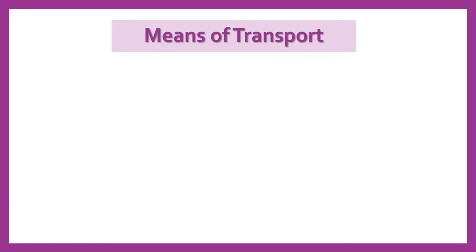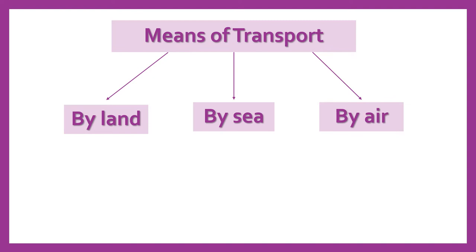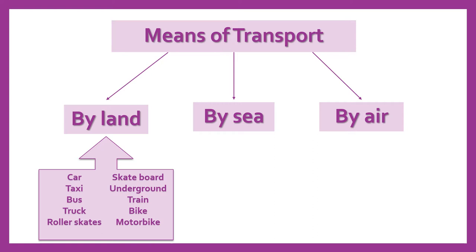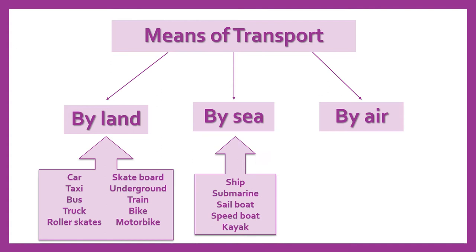First of all, we're going to remember the means of transport that we have already seen. We know that we have three types: by land, by sea, and by air. In by land, we have car, taxi, bus, truck, roller skates, skateboard, underground, train, bike, and motorbike.